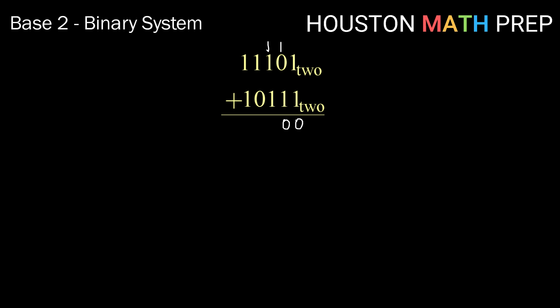Next, 1 plus 1 plus 1 plus 1 is 3, which is 1 one plus 1 group of 2 to carry. Then 1 plus 1 plus 0 is 2, so that's 0 ones and 1 group of 2 to carry. Our answer to this addition problem is 110100 in base 2.